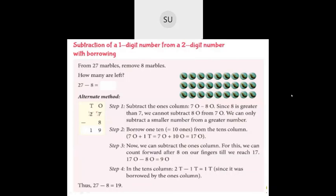Here we did 27 minus 8. In the ones column: 7 minus 8, but 7 is smaller than 8 so we cannot subtract. We borrow one ten from the tens place. With two tens, after borrowing one, one ten remains. That one ten equals 10 ones, plus the 7 ones already there becomes 17 ones. 17 minus 8 is 9, and in the tens place we have 1, so 27 minus 8 is 19.